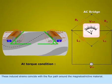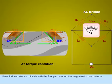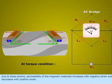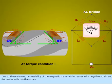These induced strains coincide with the flux path around the magnetostrictive material. Due to these strains, permeability of the magnetic materials increases with negative strain and decreases with positive strain.